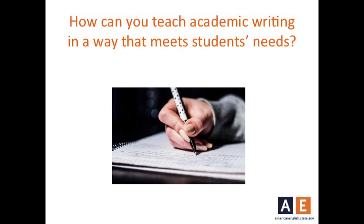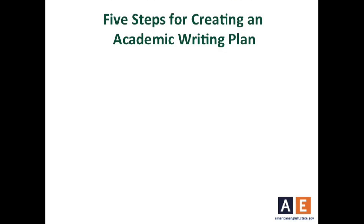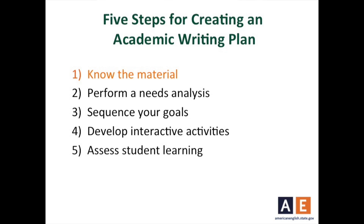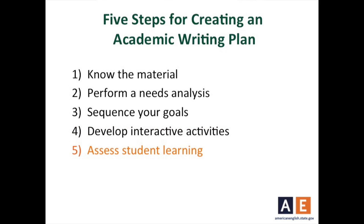Do you wonder how you can teach academic writing in a way that actually meets your students' needs? I'm going to guide you through this with five steps to academic writing. Number one, know the material. Number two, do a needs analysis and identify your goals. Number three, sequence your goals. Number four, develop interactive activities. Number five, assess student learning.